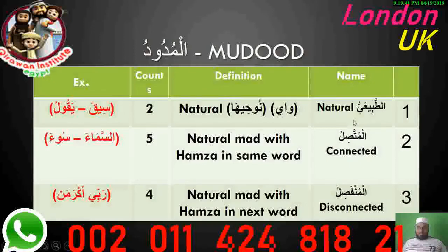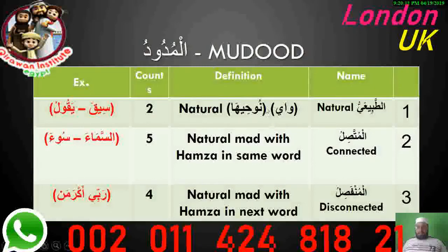Al-Madd Al-Tabi'i is easy. The letters of Madd Tabi'i are Waw, Alif, and Ya, and there are conditions with these letters. The Waw has to be preceded by Damma, like 'Nu.' The Ya has to be preceded by Kasra, like 'Hi.' The Alif has to be preceded by Fatha, like 'Ha.' The conditions are gathered in one word. You do Madd Tabi'i for just two counts.